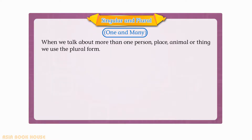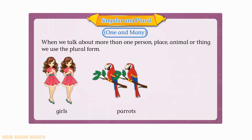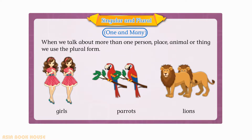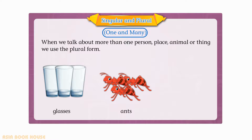When we talk about more than one person, place, animal or thing, we use the plural form. Girls, parrots, lions, glasses, ants, eggs.